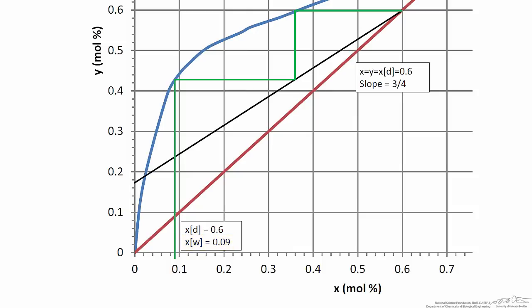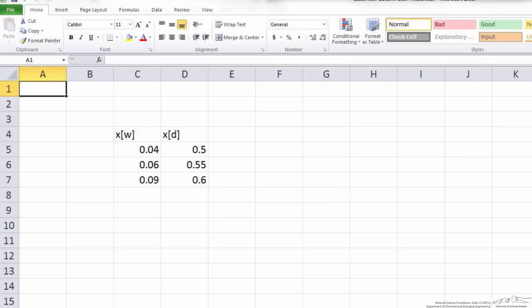Now we simply tabulate the results we've generated so far. I've shown that here with one column indicating our reboiler compositions xW and one column indicating our distillate compositions xD.